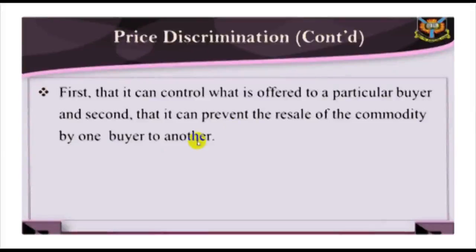Monopoly power, in some form, is necessary but not sufficient for price discrimination. The second condition — the ability to prevent resale — tends to be associated with the character of the product or the ability to classify buyers into readily identifiable groups. Services are not as easily resold as goods.